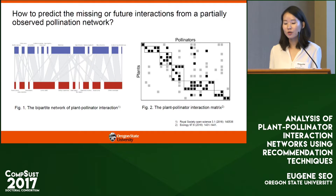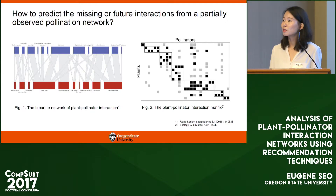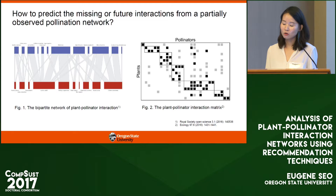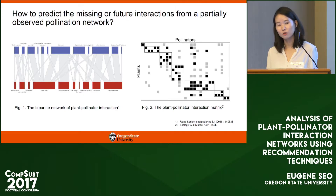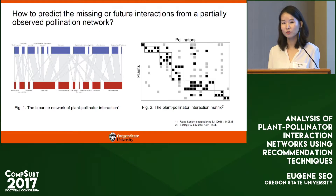However, this pollinator network is built only based on partially observed data collection, so it's possible that this network has many missing links. For example, if you look at figure number two, it shows the difference between the possible interaction colored in gray and the actual observed interaction shown in black in the interaction matrix representation. This implies that the observed interaction can be just part of all the possible interactions that could happen during field surveys.